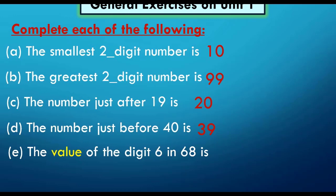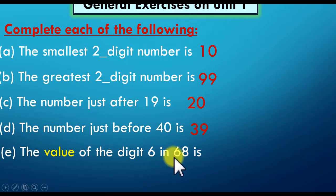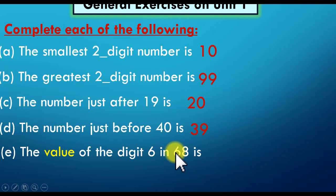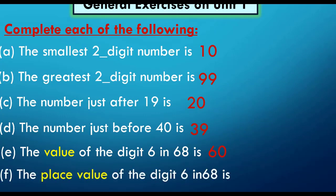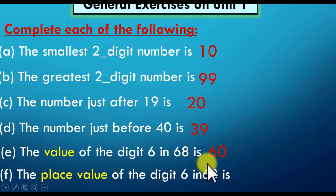Here in this question, the value of digit 6 — where is 6? In the number 68. When I read it, I say 68, so the value of 6 is 60. The place value of the digit 6 in 68: the 8 is in the units place, and the 6 is in the tens place. So the place value of 6 in 68 is tens.